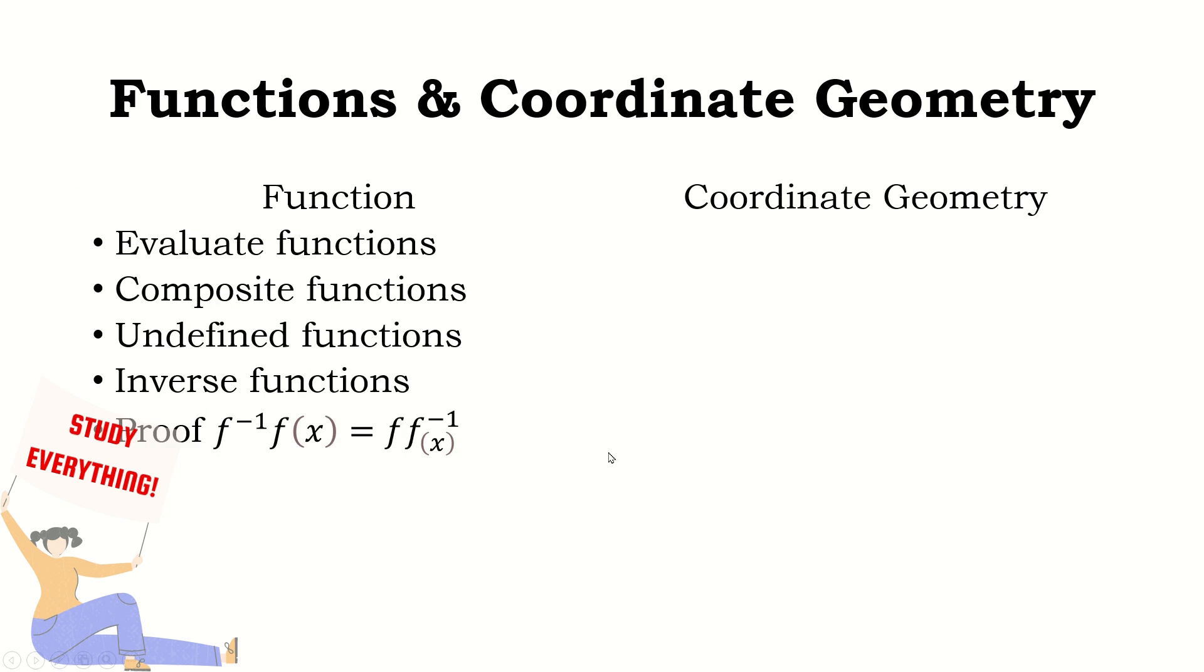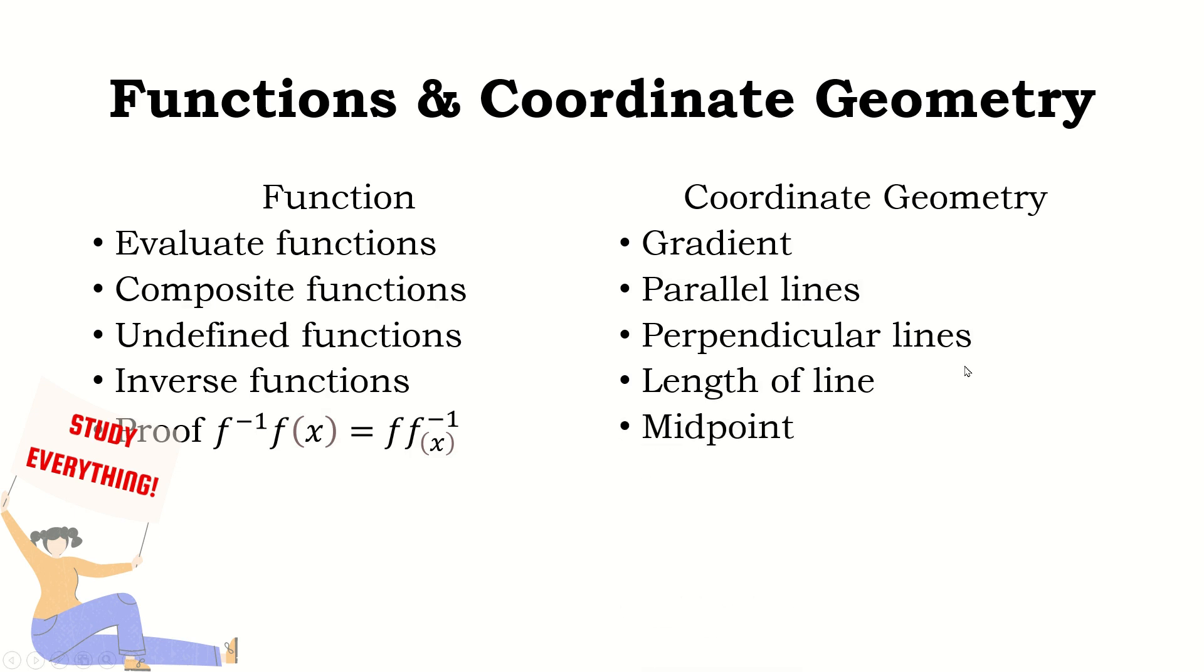On the coordinate geometry side: understand what it means by the gradient or slope, parallel lines and gradients, perpendicular lines and gradients, length of a line, midpoint. If it's about a perpendicular bisector, the point of the bisector would be the midpoint. Equation of a straight line—be able to find equation of a straight line by looking at a graph, by having only the gradient and a point, or by having two points on the line.